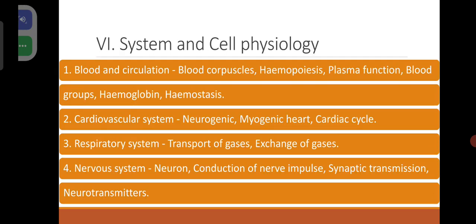System and cell physiology. Blood and circulation: blood corpuscles, haemopoiesis, plasma function, blood groups, hemoglobin, hemostasis. Cardiovascular system: neurogenic and myogenic heart, structure of heart, functioning and working of heart, cardiac cycle. Respiratory system: transport and exchange of gases. Nervous system: neuron, conduction of nerve impulse, synaptic transmission and neurotransmitters.